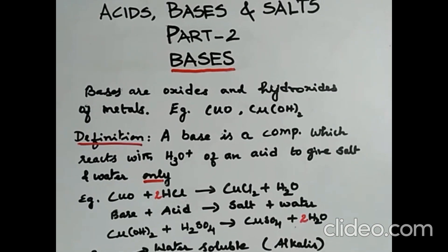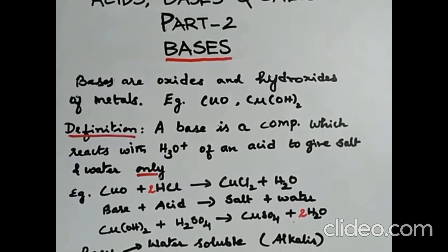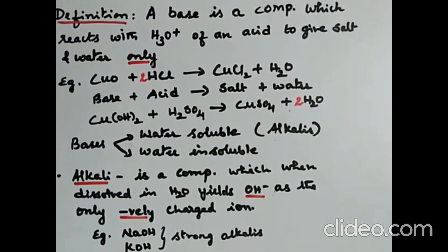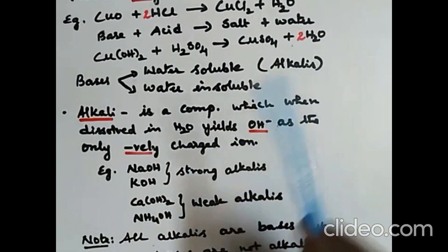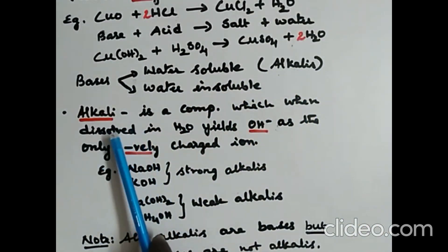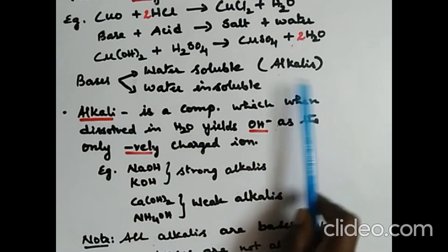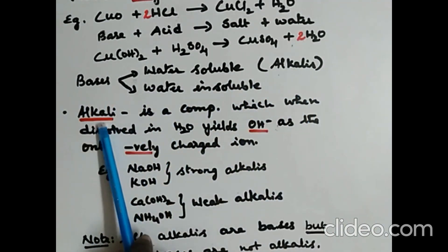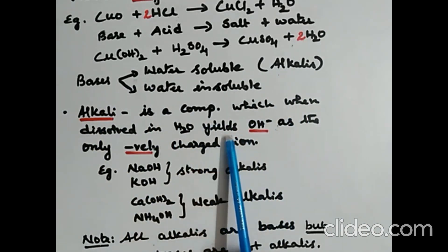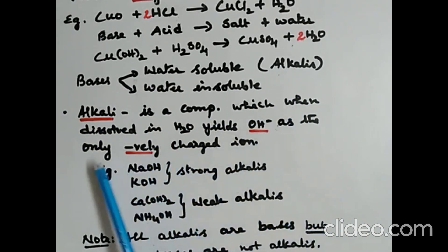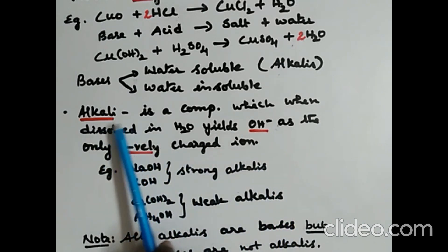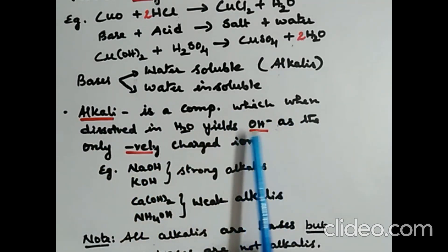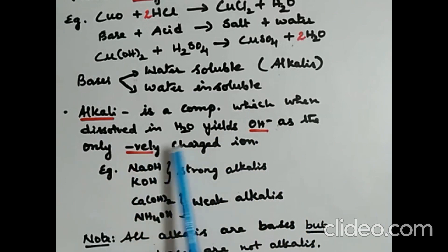Some bases are water soluble and some are water insoluble. The water soluble bases are called alkalis. Water insoluble bases don't have any particular term; they are just called bases. Alkali is a compound which when dissolved in water yields hydroxyl ion as the only negatively charged ion. The underlined words are keywords which have to be mentioned when you write any definition.